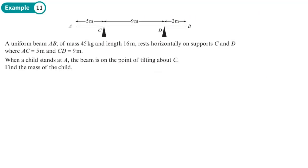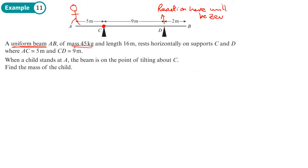We have a uniform beam, so we can put the mass at the center — mass of 45, and we've got its full length. It's on two supports, and a child is going to stand at A. The beam is on the point of tilting about C, which means C is now like a pivot. This means the beam is going to just lift off support A, so the reaction at A will be zero. When we draw our diagram and put our forces on, that reaction is going to be zero, so we won't include any force there.